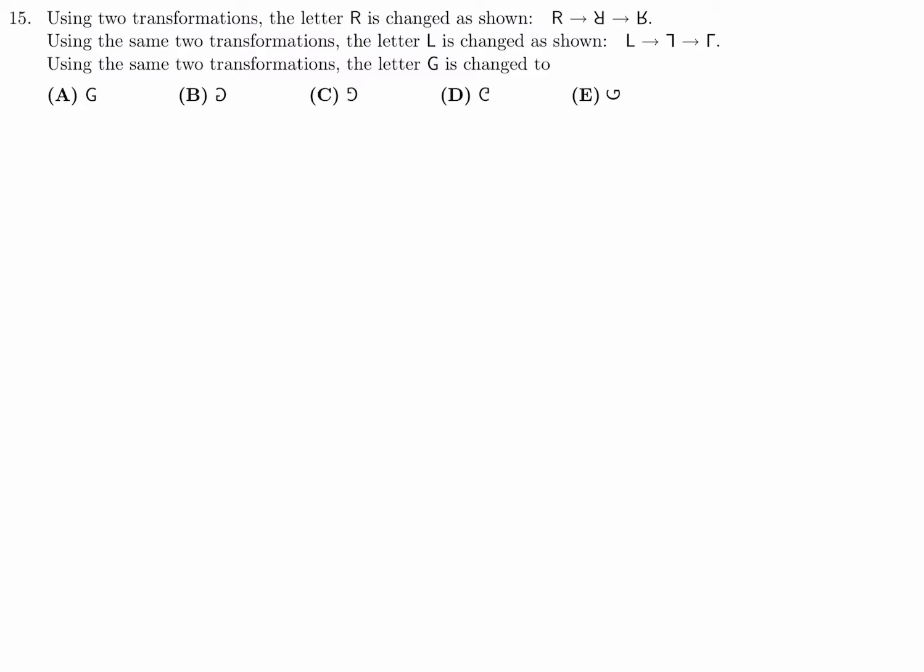Using the two transformations, the letter R is changed as shown. Using the same two transformations, the letter L is changed as shown. Using the same two transformations, the letter G is changed too. Okay. Think about this for a second. Let's look at what's going on here. All right, what I think is you are basically rotating it almost like if you had a piece of paper and you completely rotated it 180 degrees. And I am pretty sure the same thing is happening there, right?